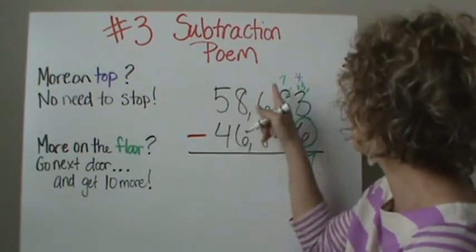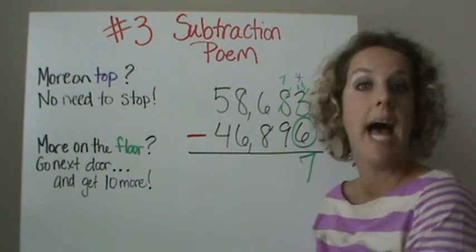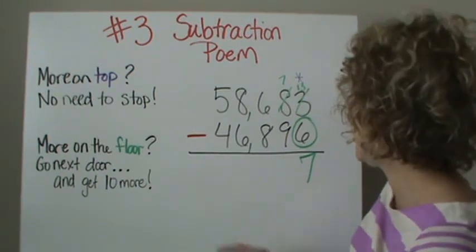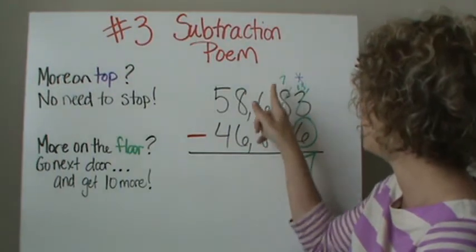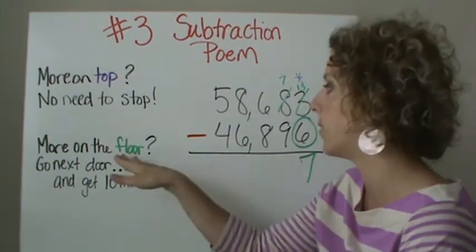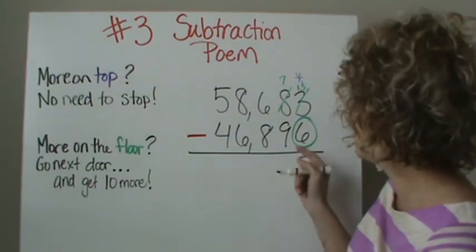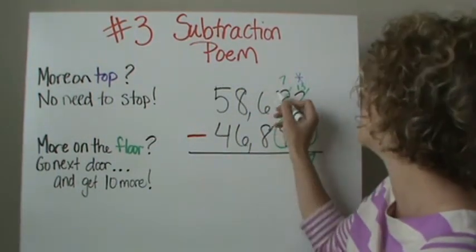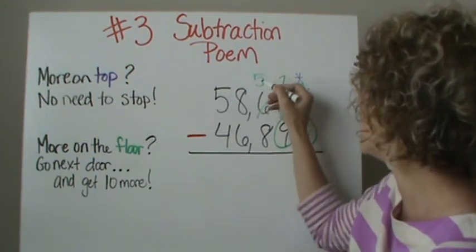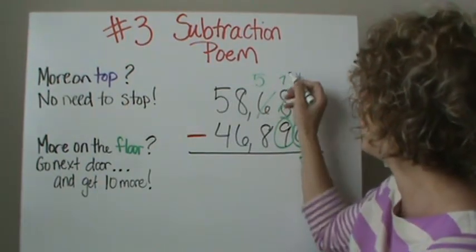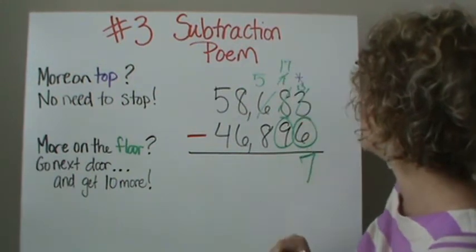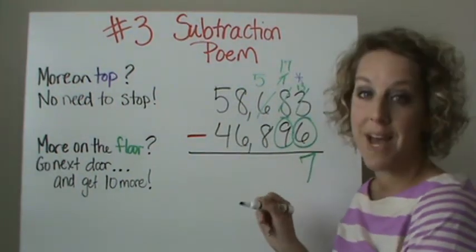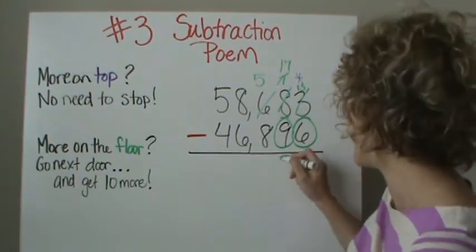Let's look at the tens place: seven minus nine. Again, I can't do it. Is there more on top — the seven — or more on the floor? More on the floor. Grab the green marker. Seven minus nine: there's more on the floor, so go next door and get ten more. The six becomes a five, and give ten to the seven — now it's seventeen. Seventeen minus nine is eight.